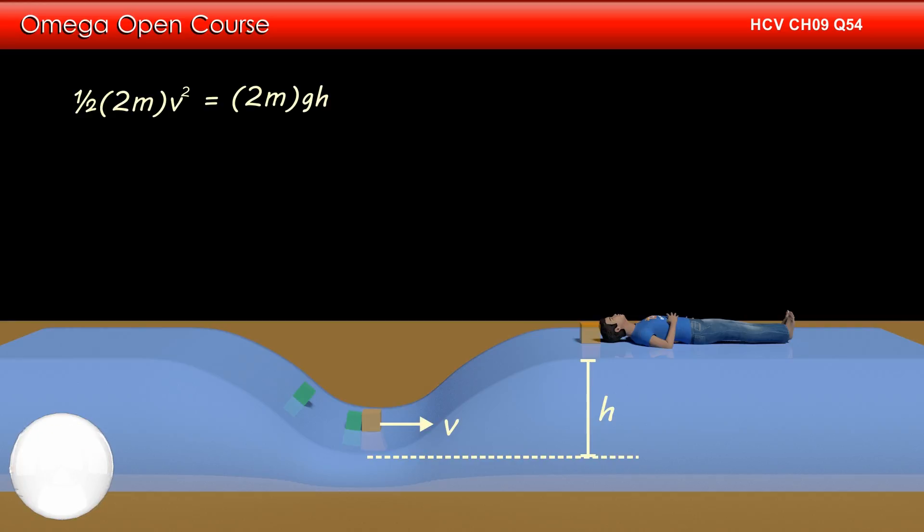If v is the speed just after the collision, then its kinetic energy is ½(2m)v². In limiting case, this energy must be equal to the minimum energy required to raise the block by height h, or ½(2m)v² must be equal to 2mgh. This implies v² = 2gh or v = √(2gh).